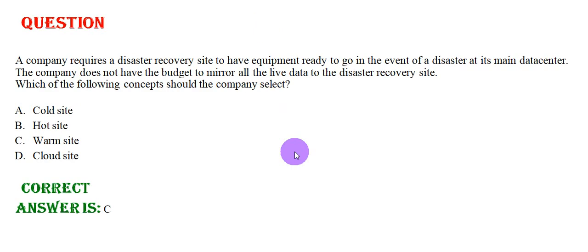A company requires a disaster recovery site to have equipment ready to go in the event of disaster at its main data center. The company does not have the budget to mirror all the live data to the disaster recovery site. Which of the following concepts should the company select? Option A: Cold site. Option B: Hot site. Option C: Warm site. Option D: Cloud site. The correct answer is Option C.